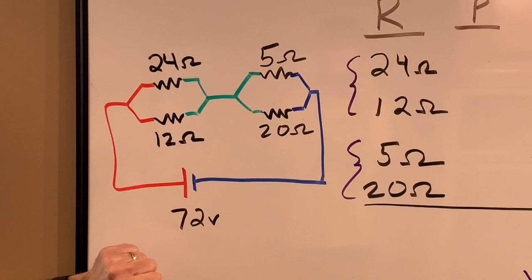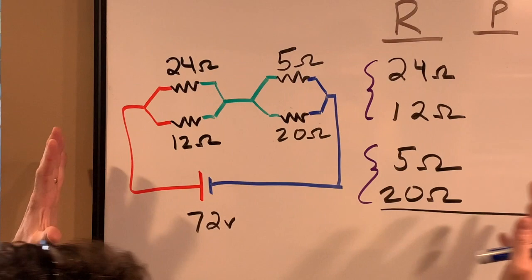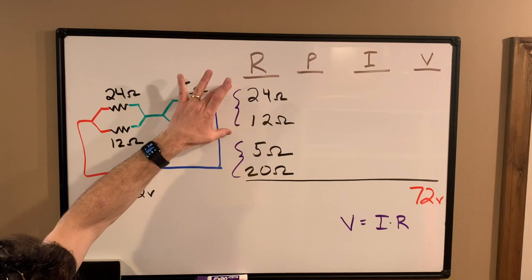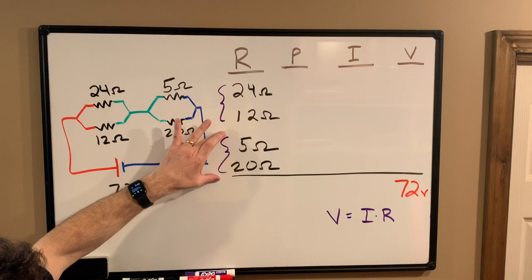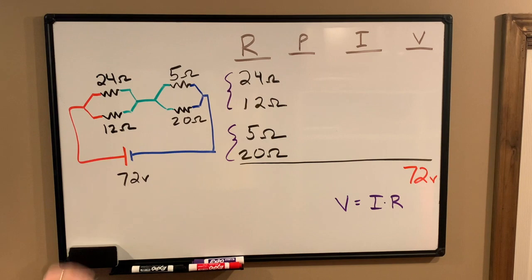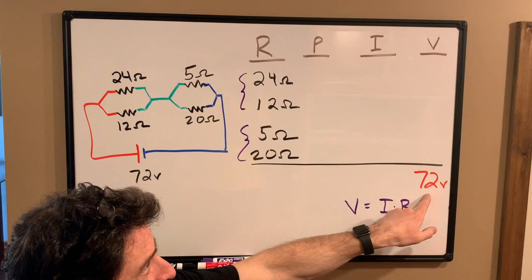Okay, and then once we've got the total resistance we can get the total current coming out of the battery, and then we'll start to fill in this whole big board here. I've got my four resistors all listed. I bracketed those together because those appear to be parallel to each other. I bracketed the five and the twenty because those appear to be parallel to each other, and this green wire in between is putting the left side in series with the right side. Okay, we've got a 72 volt battery. I've already got that filled in as my total voltage.